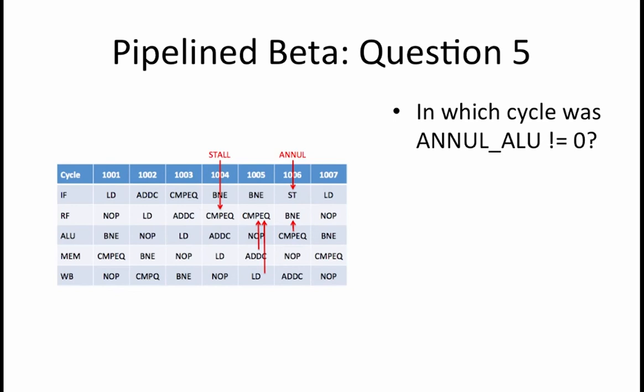In which cycle was null_ALU not equal to 0? In other words, in which cycle did we initiate the replacement of an instruction in the ALU stage with a NOOP? This does not occur in our example.